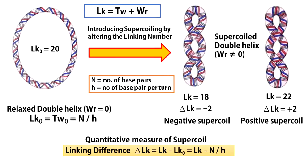At this stage, the linking number is simply given by the twist — that is the total number of base pairs divided by the number of base pairs per turn. This is called the relaxed state linking number, LK0. LK0 is not necessarily an integer, which means it is not a true linking number at all. But still, it serves as a reference point for the measurement of the level of supercoiling. A supercoiled DNA is any DNA having a linking number different from this relaxed state linking number LK0.